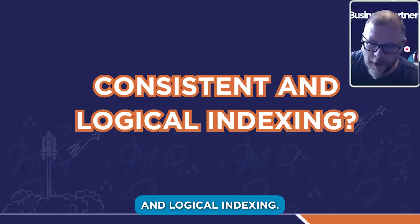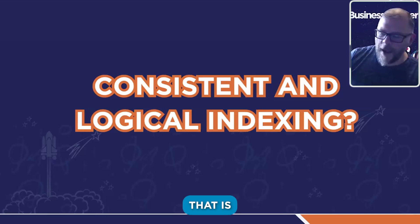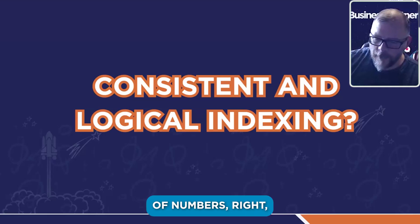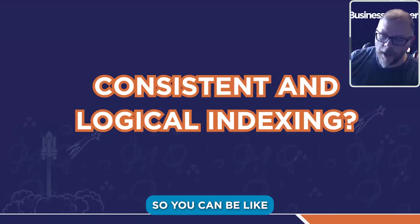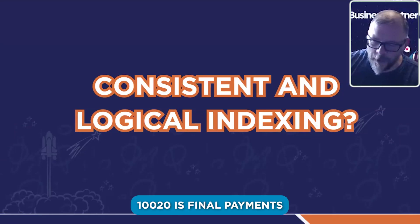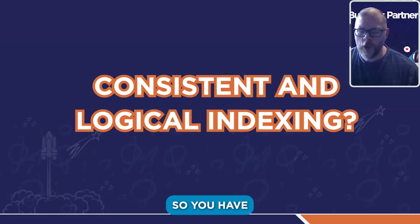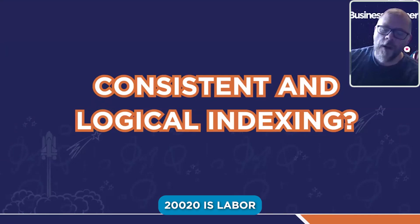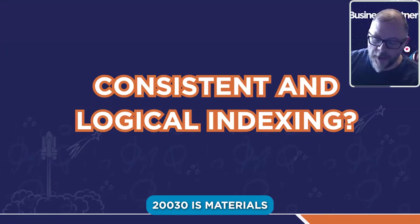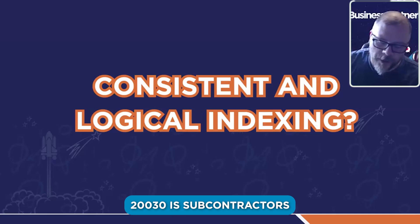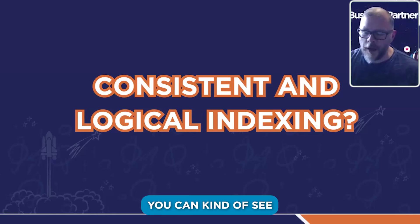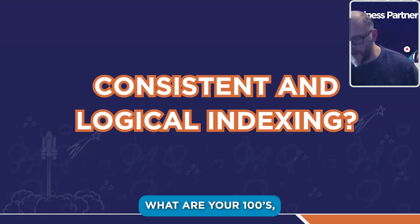Monthly clarity can come from consistent and logical indexing. You want a numerical index that lets you categorize accounts — so your 100s might be income, where 10010 is deposits and 10020 is final payments. Your 200s or 500s could be cost of goods sold, so 20020 is labor, 20030 is materials, 20040 is subcontractors, 20050 is permits. This way you can see what falls into each category.